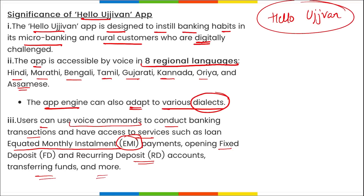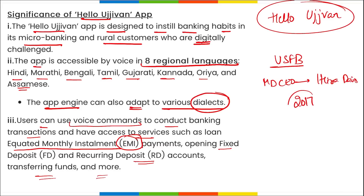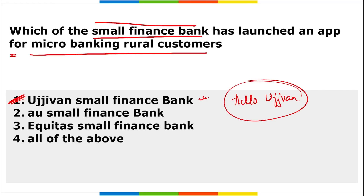Highly important: Ujjivan Small Finance Bank was established in 2017 and its headquarters is in Bangalore, Karnataka. Ujjivan Small Finance Bank has launched the Hello Ujjivan application — designed for people with limited reading and writing skills. It is based on three Vs: visual, voice, and vernacular. Hello Ujjivan is accessible in 8 regional languages.